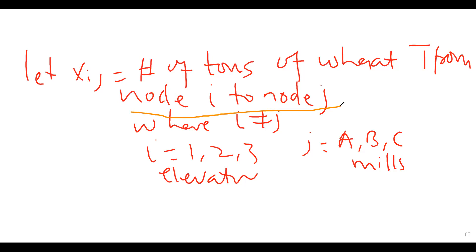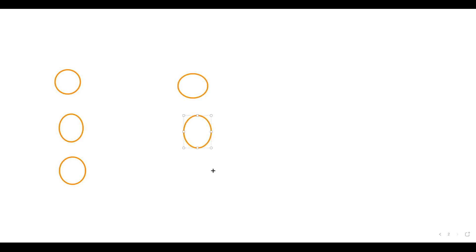The next thing is to draw a network diagram. The nodes are represented as circles. In our example, the cities 1, 2, 3 were the places where the elevators were — these are the supply nodes. Then we also have the demand nodes A, B, C where the items are taken to. The supply values were 150, 175, and 275, and the demand values were 200, 100, and 300.